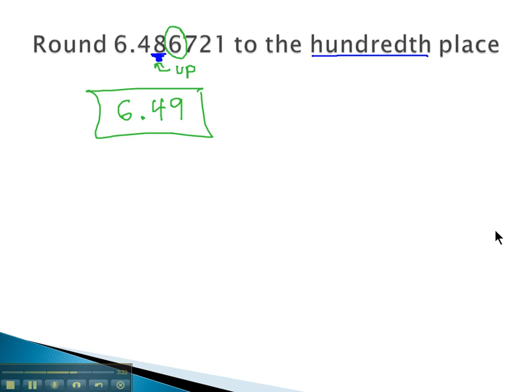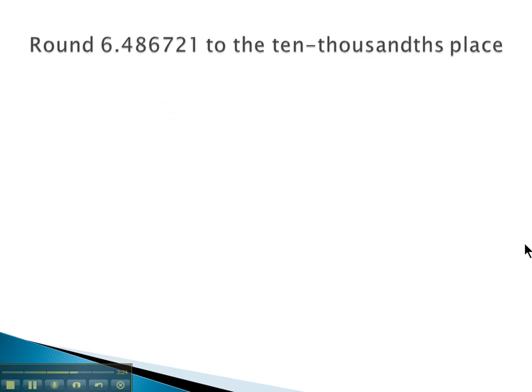Let's try one more example. Same number, but this time we're going to round to the ten-thousandths place. Counting out our decimals, the first decimal digit is the tenths, hundredths, thousandths, ten-thousandths place. The seven is in the ten-thousandths place.